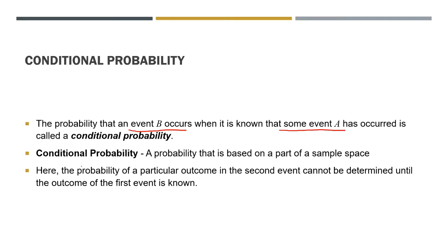Conditional probability is a probability that is based on a part of a sample space. The probability of a particular outcome in the second event cannot be determined until the outcome of the first event is known. Meaning to say, in order for us to know the probability of the second event, we have to know first that the first event has already occurred or we already know the outcome of the first event.